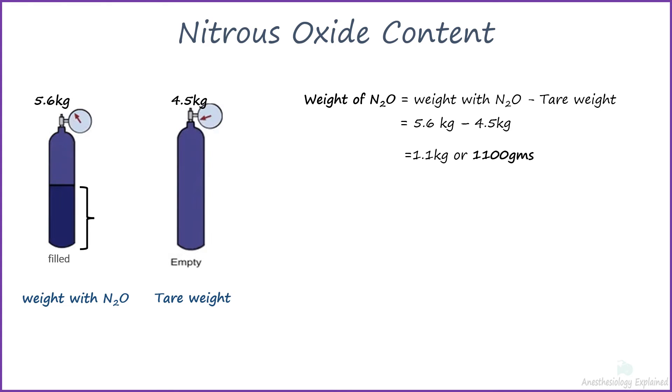As per Avogadro's hypothesis, 1 mole of nitrous oxide with molecular weight of 44 grams occupies 22.4 liters of volume. Therefore, the volume occupied by 1100 grams of nitrous oxide can be calculated as 560 liters.